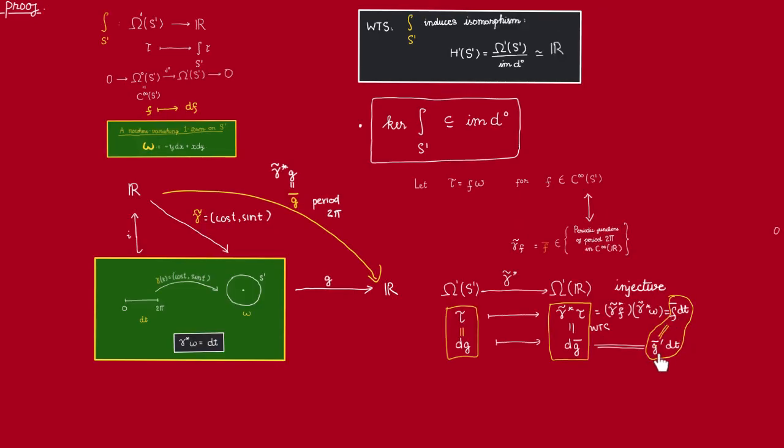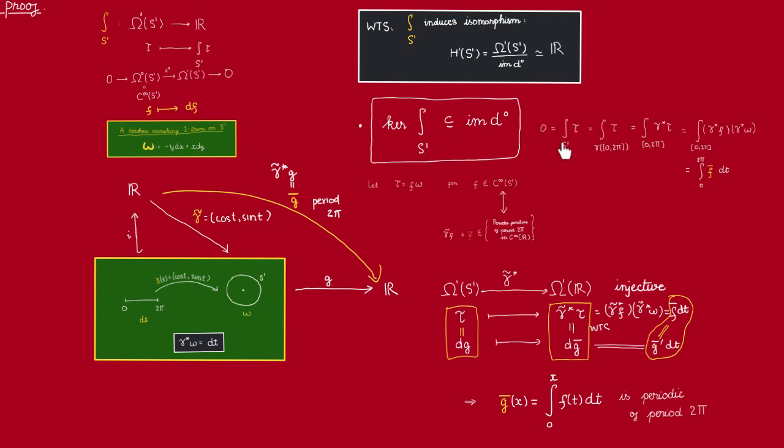But isn't that trivial? Isn't that always the case that we can find an antiderivative of this f̅? The same way that we constructed an antiderivative when we proved that H^1 of the real line is trivial, right? Now, there is a subtle point here. Yes, we can always construct an antiderivative this way. But we need to check that this antiderivative is periodic of period 2π so that it's the pullback of some function on S^1. And that is why we use the hypothesis that tau lies inside the kernel of this map S^1. And because tau lies inside the kernel, we know that this integral is 0. But this integral is really the integral of the pullback of tau over this interval 0 to 2π, right? So, that's really just the integral from 0 to 2π of f̅ dt. So, this is trivial.